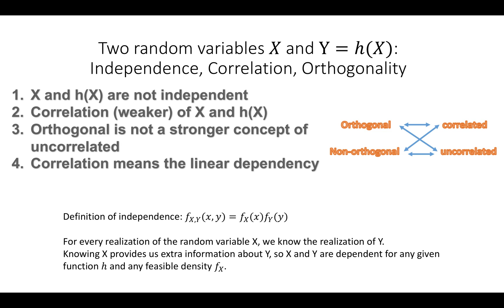Our first point is that x and h(x) are not independent. Usually we judge from the definition of independence, which says the joint distribution of x and y should equal the product of the marginals f(x) and f(y). But here, we do not need to know the density function of x. This holds for all possible f(x), because for every realization of x we know the realization of y, since y equals h(x). That means knowing x provides extra information about y, so x and y are dependent — because if they were independent, knowing x should give us no information about y.